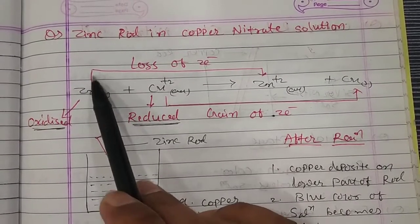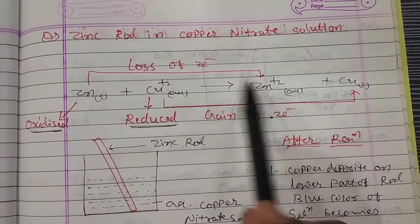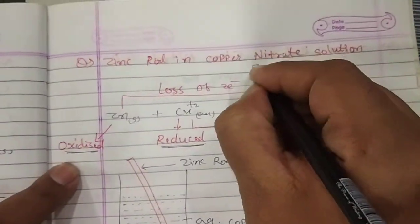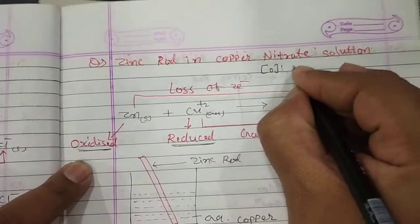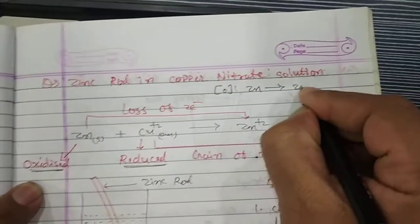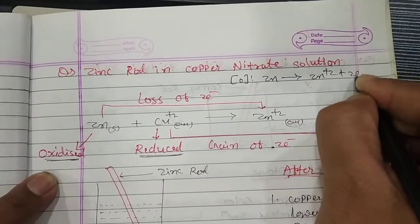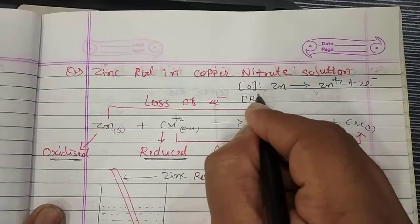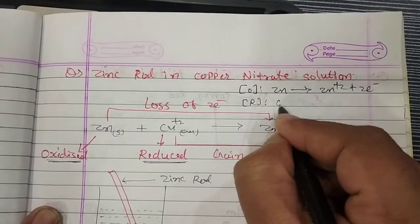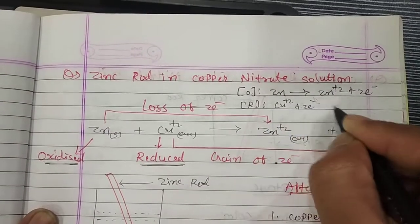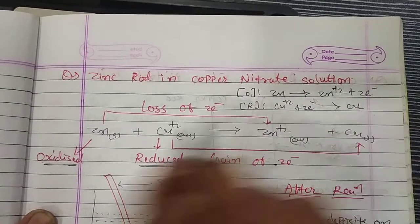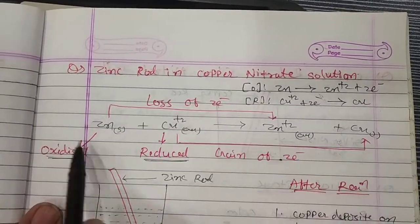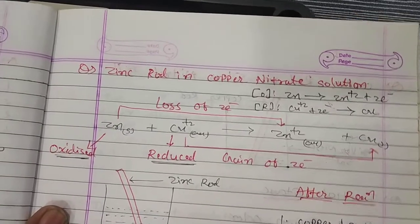What is Zn²⁺? Zn²⁺ — that is oxidation. If you want to write the oxidation reaction: Zn gives Zn²⁺ plus 2 electrons. The opposite reaction is reduction. Copper²⁺ plus 2 electrons gives copper. When we cancel both, it becomes a redox reaction.